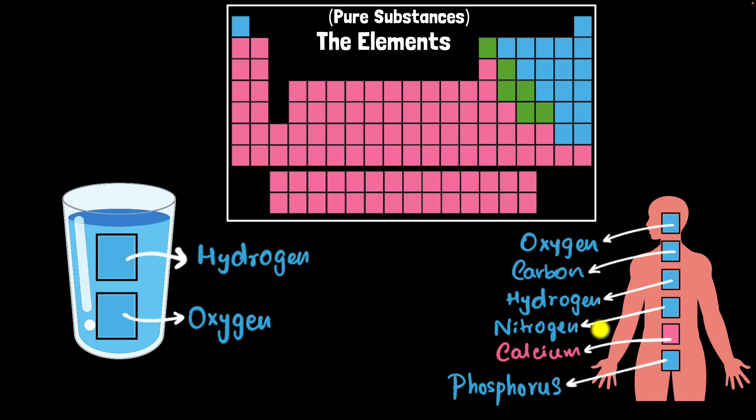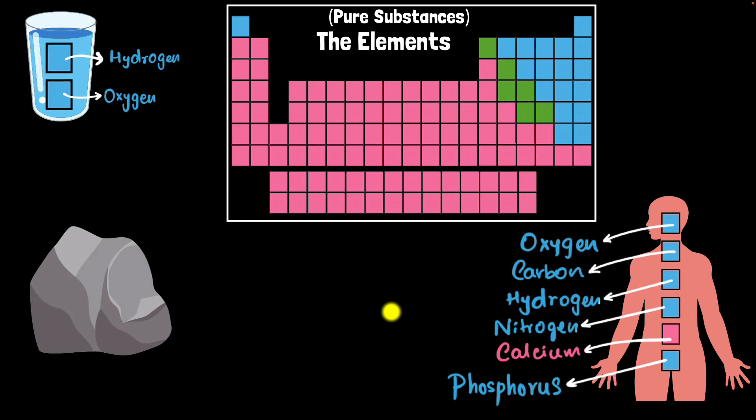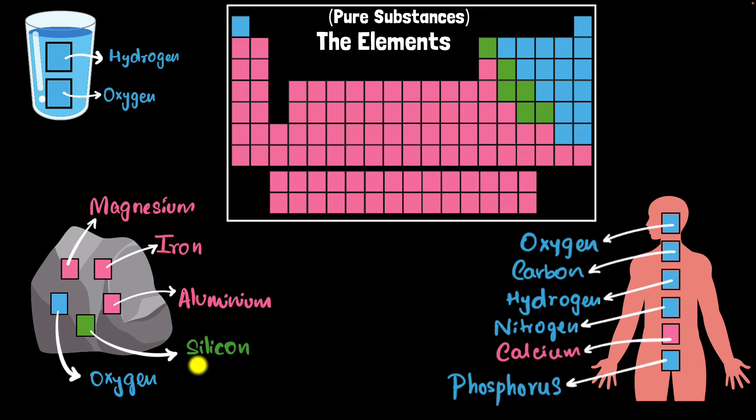I mean, there are other elements but these mostly make it up. And just to give you another example, if you consider any rock, then they're mostly made of five elements: silicon, oxygen, aluminum, magnesium, and iron.